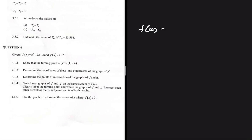Show that the turning point of f is at x equals 1 and y equals minus 4. We're given f of x equals x squared minus 2x minus 3. We want to show that the turning point of f is at x equals 1 and y equals minus 4.